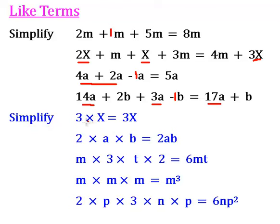We're asked to simplify these multiplications. 3 times x can be simplified to 3x. 2 times a times b is 2ab.